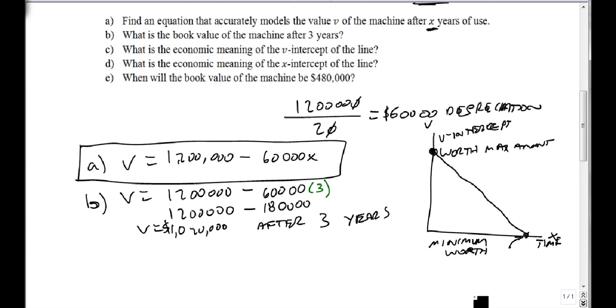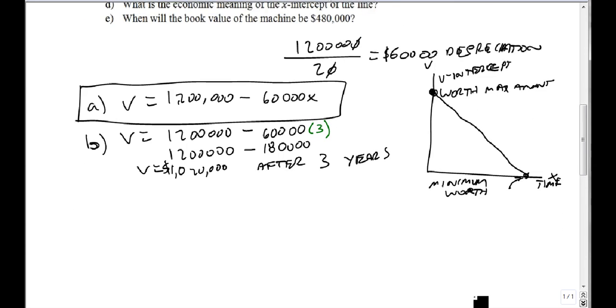One last part: when will the book value of the machine be $480,000? Instead of replacing x, we're going to replace V. So 480,000 equals 1.2 million minus 60,000x, and we'll solve for x.